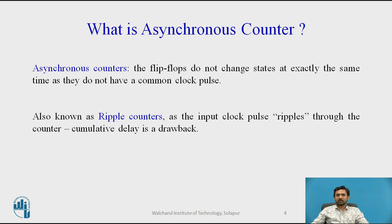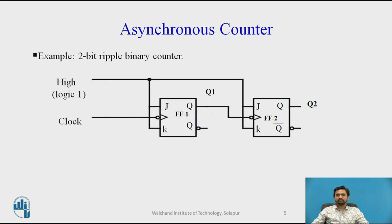An asynchronous counter is also known as a ripple counter, as the input clock pulse ripples through the counter and cumulative delay is a drawback. The flip-flops are serially connected together and the clock pulse ripples through the counter. An asynchronous counter can count 2 to the power n possible counting states. For example, in a 2-bit ripple binary counter, only the first flip-flop is clocked by an external clock. The circuit uses 2 JK flip-flops to implement a 2-bit ripple binary counter, counting upward through 2² = 4 states.